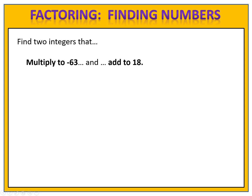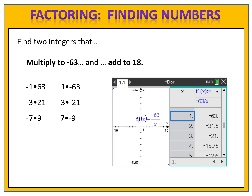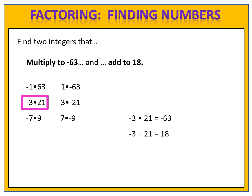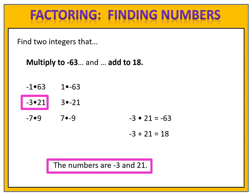Can you find two integers that multiply to negative 63 and add to 18? Please pause the video. Possible candidates are negative 1 times 63, 1 times negative 63, negative 3 times 21, 3 times negative 21, negative 7 times 9, and 7 times negative 9. You can come up with those from your head or use the graphing calculator — enter negative 63 divided by x. Which pair adds to 18? Negative 3 and 21. Verify: negative 3 times 21 equals negative 63, and negative 3 plus 21 equals 18. The numbers are negative 3 and 21.